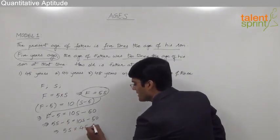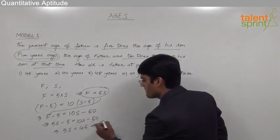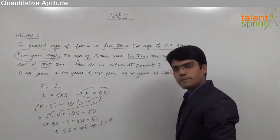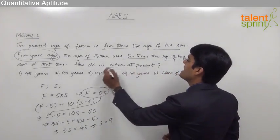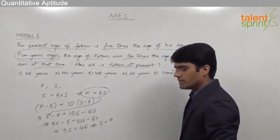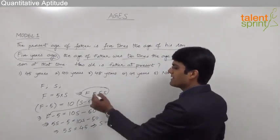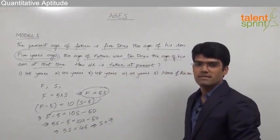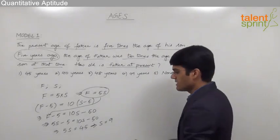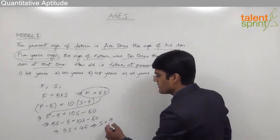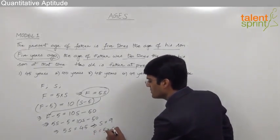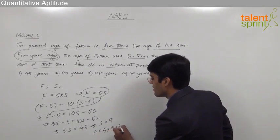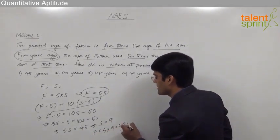So S equals 45 divided by 5, which is 9. But we are supposed to find out father's age at present. Since father's present age is 5 times the son's present age, if S equals 9, then F equals 5 into 9, that is 45 years.